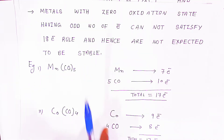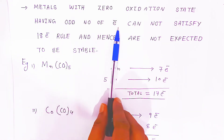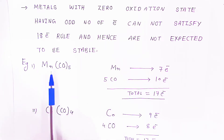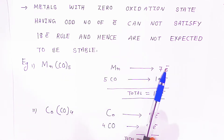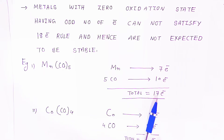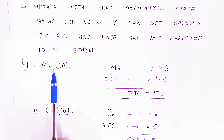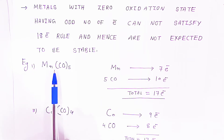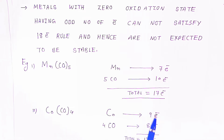Metals with a 0 oxidation state having an odd number of electrons cannot satisfy the 18 electron rule, and hence they are not expected to be stable. For example, in the complex Mn(CO)5, manganese has 7 electrons and 5 carbonyl ligands provide 10 electrons; 7 + 10 = 17 electrons. Similarly, in Co(CO)4, cobalt has 9 electrons and 4 carbonyl ligands give 8 electrons; 9 + 8 = 17 electrons. These complexes do not follow the 18 electron rule, and therefore they are not stable.